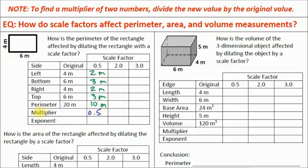The next line asks: what is the multiplier written in exponential form? I'm looking for whether I can express this multiplier as a number containing the scale factor. I can — this is just 0.5 to the first power. 0.5 to the first power equals 0.5. You'll see how this plays out in a moment.